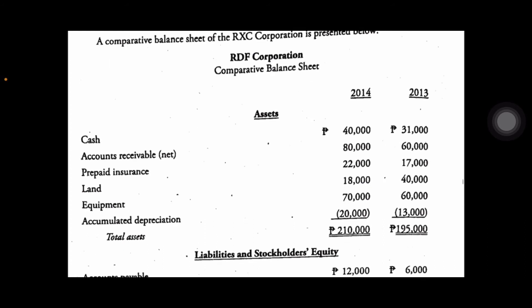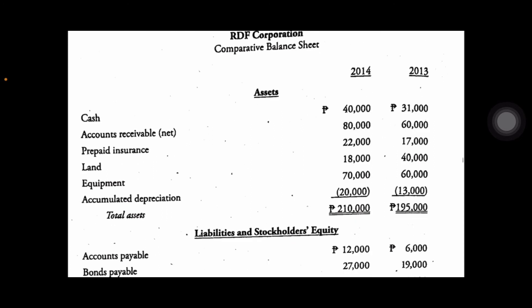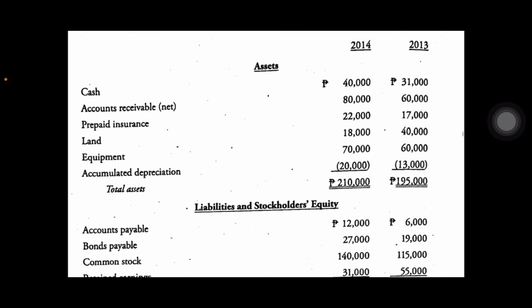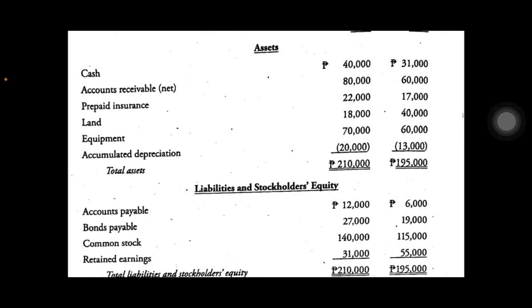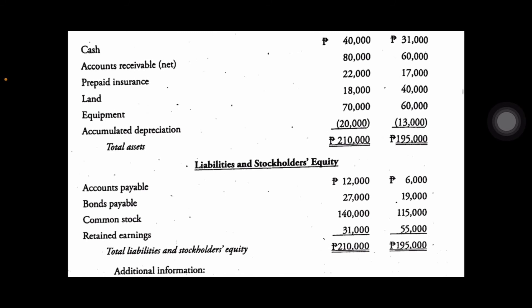For liabilities and stockholders' equity, we have accounts payable of Rp6,000 in 2013 rising to Rp12,000 in 2014. Bonds payable: Rp19,000 to Rp27,000. Common stock: Rp115,000 to Rp140,000. Retained earnings went from Rp55,000 in the first period to Rp31,000. Total liabilities and equity: Rp195,000 in 2013 and Rp210,000 in 2014 — they balance.